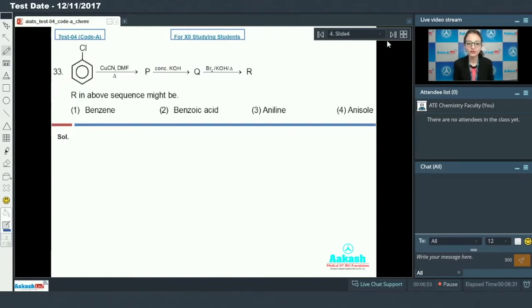Next question, question number 33: Isme ek reaction sequence given hai. So let us complete this reaction sequence. Chlorobenzene when reacts with Cu-CN in DMF and it is heated, this is a substitution reaction. Cl group will be replaced by CN and this is compound P. Next, cyanobenzene when reacts with concentrated KOH it produces amide.